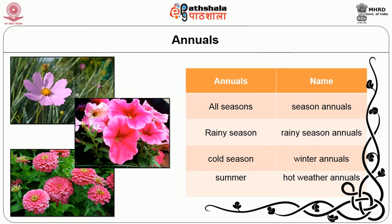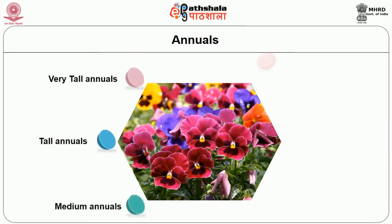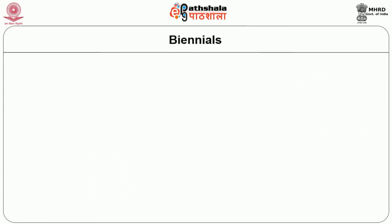Some annuals withstand more rain than others — they are called rainy season annuals and are grown to produce flowers in April to May. Some annuals withstand the cold season and are called winter annuals, while others withstand vigorous heat and are known as hot weather annuals. In general, annuals are classified by height as very tall, tall, medium, semi-dwarf, dwarf and lilliput annuals.